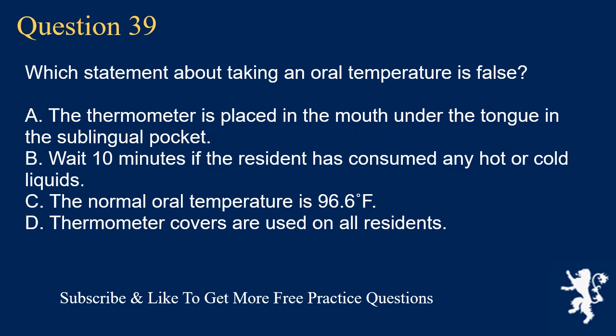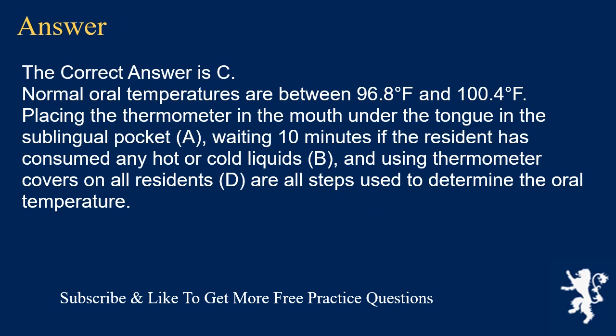Question 39. Which statement about taking an oral temperature is false? A. Thermometer is placed in the mouth under the tongue in the sublingual pocket. B. Wait 10 minutes if the resident has consumed any hot or cold liquids. C. The normal oral temperature is 96.6°F. D. Thermometer covers are used on all residents. The correct answer is C. Normal oral temperatures are between 96.8°F and 100.4°F. Placing the thermometer under the tongue, waiting 10 minutes after hot or cold liquids, and using thermometer covers on all residents are all correct steps for determining oral temperature.